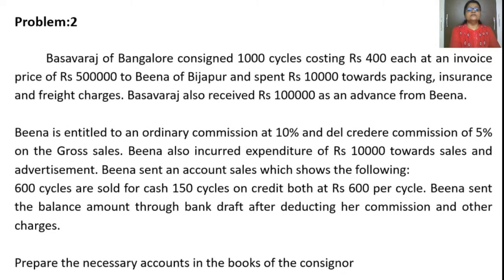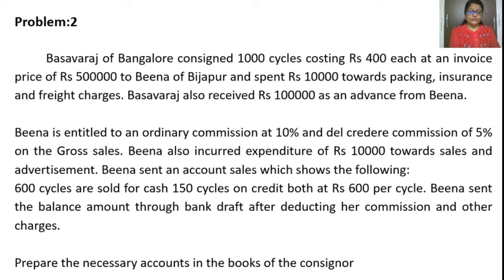Now let us take another problem. Basav Raj of Bangalore consigned 1,000 cycles costing Rs. 400 each at an invoice price of Rs. 5,00,000 to Bina of Bijapur and spent Rs. 10,000 towards packing, insurance, and freight charges. Basav Raj also received Rs. 1,00,000 as an advance from Bina. Bina is entitled to an ordinary commission of 10% and del credere commission of 5% on gross sales. Bina also incurred expenditure of Rs. 10,000 towards sales and advertisement. Bina sent an account sales showing 600 cycles sold for cash and 150 cycles on credit, both at Rs. 600 per cycle. Bina sent the balance amount through bank draft after deducting her commission and other charges. Prepare necessary accounts in the books of the consignor.